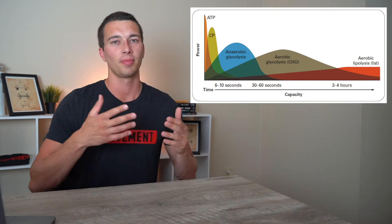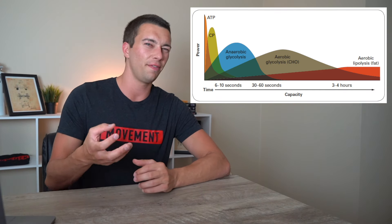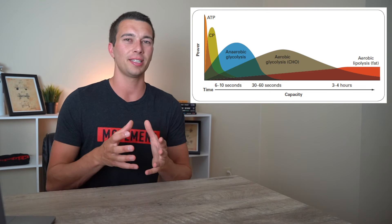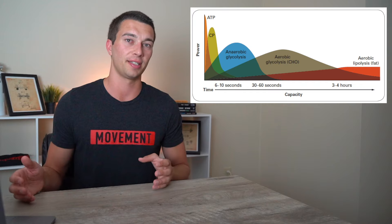If you're running a 5k, a 10k, this may give you 30% of your energy, 35, 40% of your energy, again, depending on your training status. But it really doesn't become a primary energy system until those really long duration events.